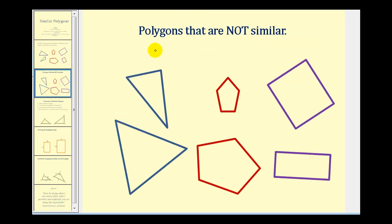To contrast this, here are some polygons that are not similar. These two triangles are not similar because they're not the same shape, and obviously not the same size. Same thing with these two pentagons and these two rectangles — they're not the same shape, therefore they are not similar.